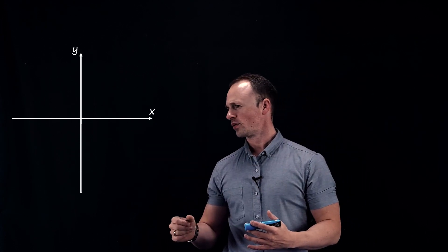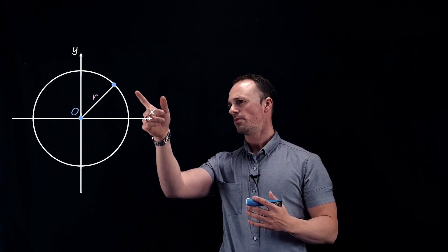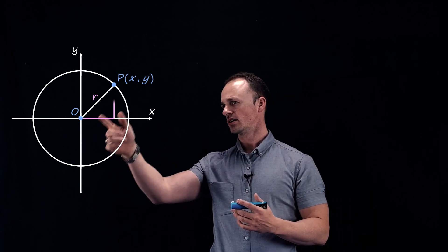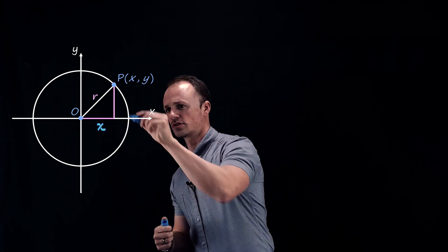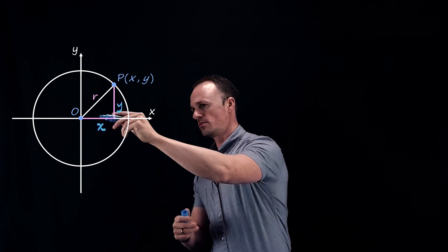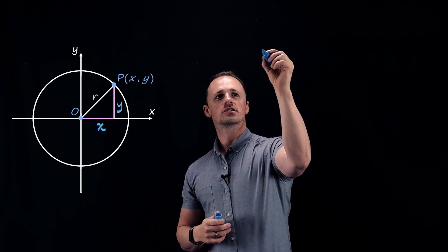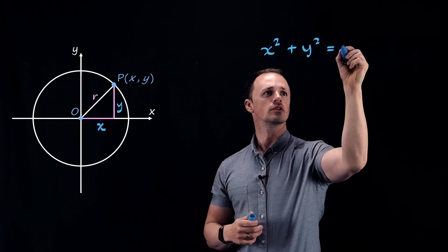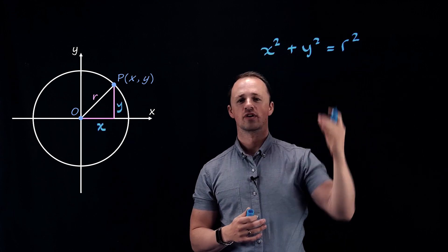To begin with, we'll have a circle with radius r that has its centre at the origin (0, 0), and we'll consider a point on the circumference with coordinates x, y. To get from the centre to the point x, y, we need to go a distance x across and y up. Think about the radius of this circle being the hypotenuse of a right-angled triangle. That means we can use Pythagoras to say that the distance across squared plus the distance up squared equals the radius squared. And there we have the equation of a circle with centre (0, 0) and radius r.